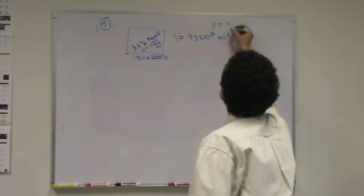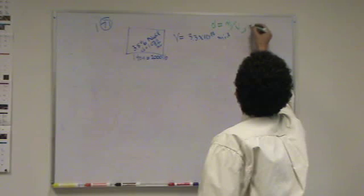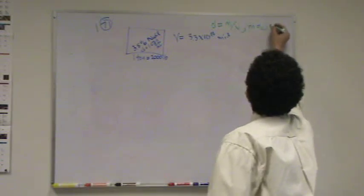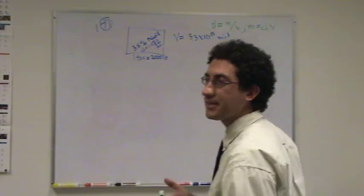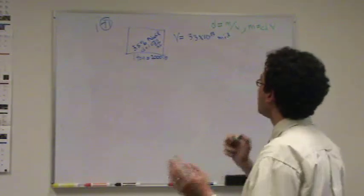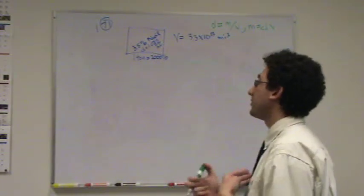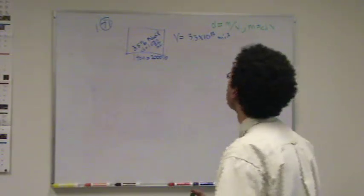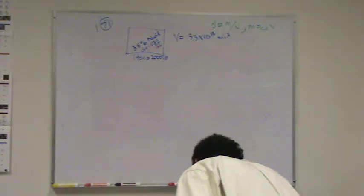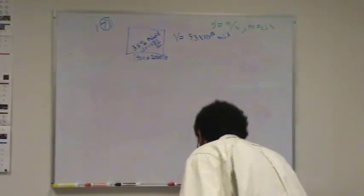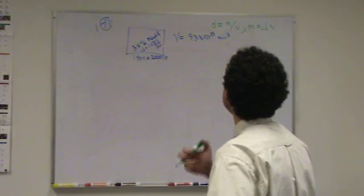Density is mass per volume, so mass is density times volume. If that was it, we'd be done. The problem's going to be when we start converting the units. They ask for mass in tons. How painful.